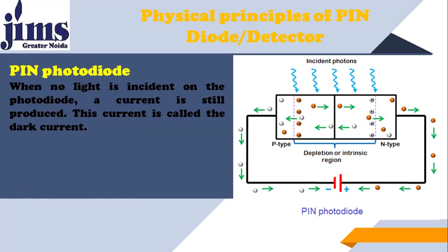The question is: we do reverse biasing in a photodiode because we want photocurrent. When the photon is incident on the active layer, due to the photon, electrons become free and those free electrons create a current called photocurrent. But what happens is: even with reverse biasing where there should be no current, and even when there is no photon incident on the active layer, you still get a very, very small amount of current — very few amperes. That current is called dark current.